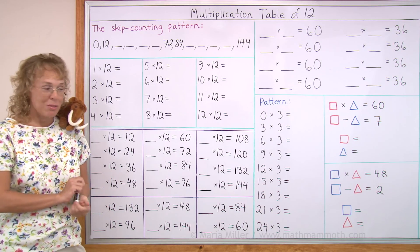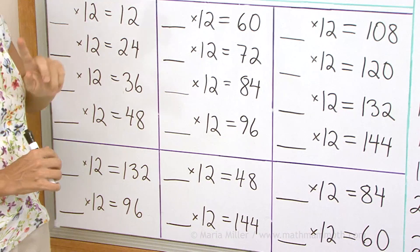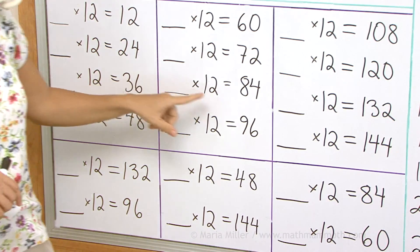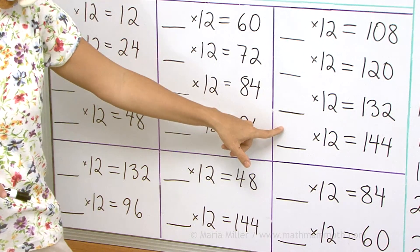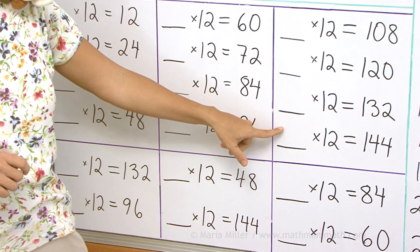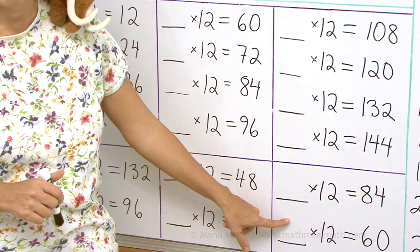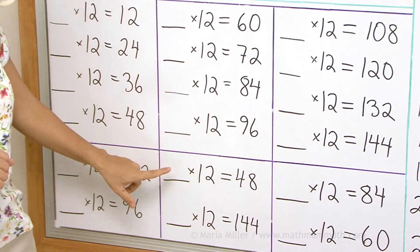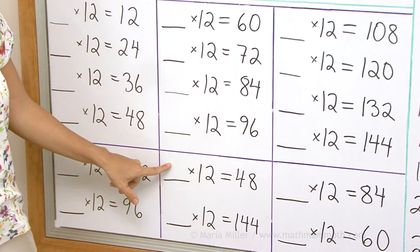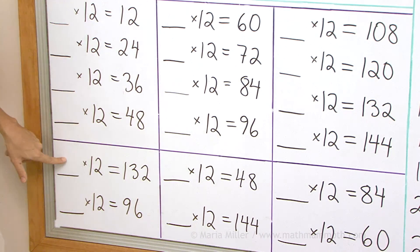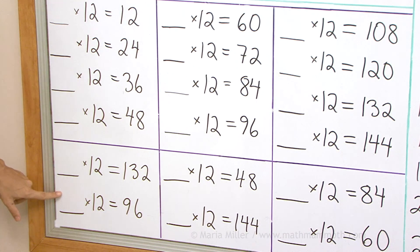And then the table backwards as usual. How many times 12 is 84? Seven. How many times 12 is 144? 12. How many times 12 is 60? Five times. How many times 12 is 48? Four. And how many times 12 is 132? Eleven. And how many times 12 is 96? Eight.